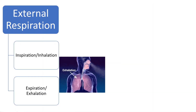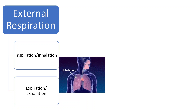The two processes involved in external respiration are inspiration (or inhalation) and expiration (or exhalation). During inhalation, oxygen from the air enters through the nose and gets into the lungs through the windpipe or trachea. In exhalation, carbon dioxide and water vapor from the lungs are expelled out. Thus, in external respiration, we see exchange of gases between the environment and lungs.